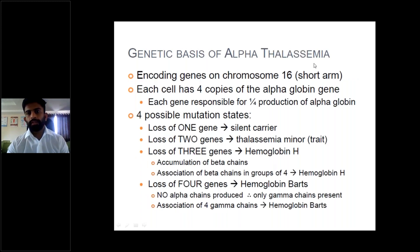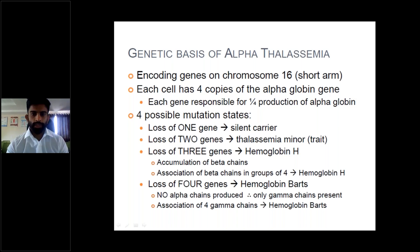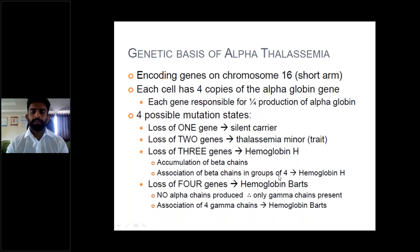The genetic basis of alpha thalassemia: encoding genes are on the short arm of chromosome 16. Each cell has four copies of the alpha-globin gene, and each gene is responsible for one-fourth of alpha-globin production. There are four possible mutation states. Loss of one gene leads to a silent carrier. Loss of two genes leads to thalassemia minor trait. Loss of three genes leads to hemoglobin H disease, because there is accumulation of beta chains forming tetramers called hemoglobin H.